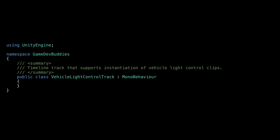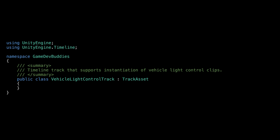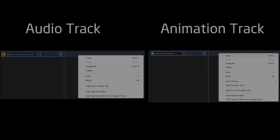We can start with the vehicle light control track component. Every track needs to inherit from the TrackAsset class. This is an abstract class that provides a bunch of functionality that every track should have. If you're getting an error when specifying the TrackAsset base class, make sure to add a using statement for the UnityEngine.Timeline namespace, since the TrackAsset class is defined inside of it.